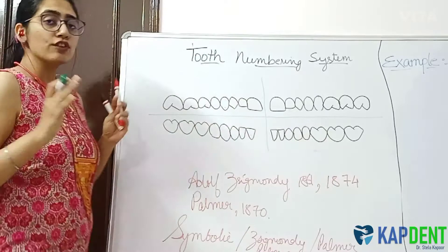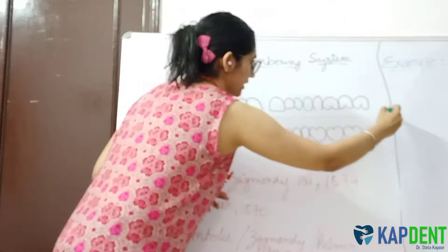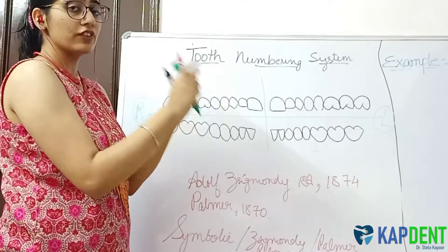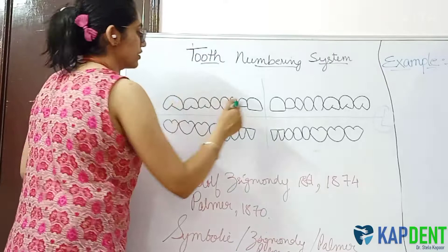When you are looking at the patient, this is the right side of the patient while this is the left side. In this system, we start numbering from the inside of the quadrants — that is, we number from the central incisor and move outside towards the third molar. So for permanent dentition, the teeth are numbered 1 through 8.